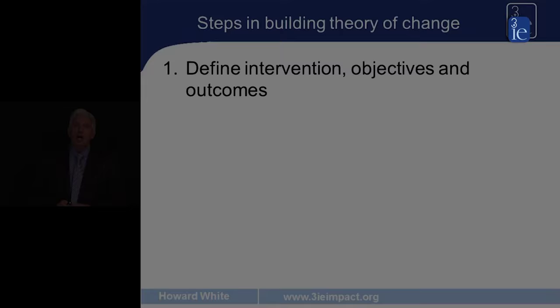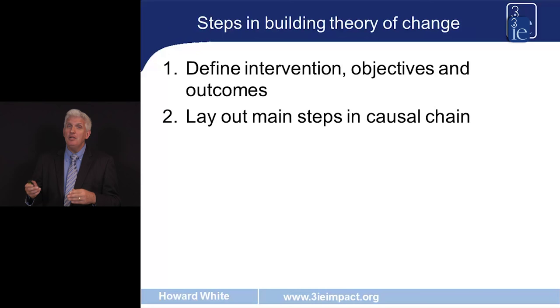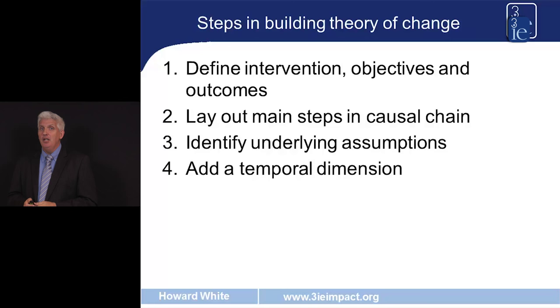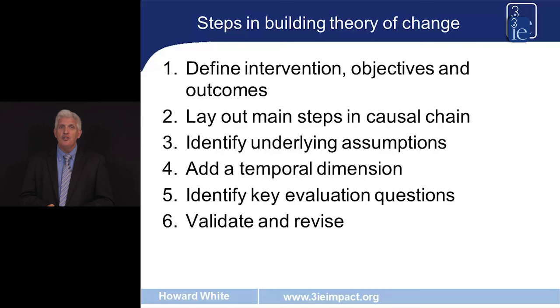So what are the steps in building a theory of change? The first step is to be clear about the intervention, its objectives and the outcomes that it hopes to achieve. The second step is to lay out the causal chain and then the underlying assumptions. The fourth step is to add a temporal dimension, which is required for planning or impact evaluation. Having done all that, we can identify the evaluation questions and then seek to validate and if necessary revise the theory of change with key stakeholders.